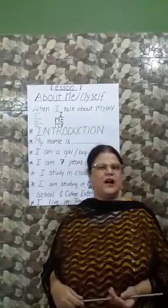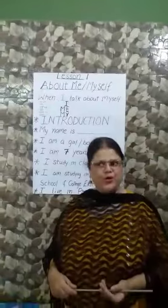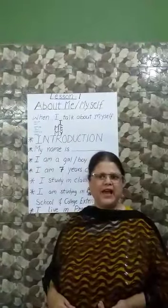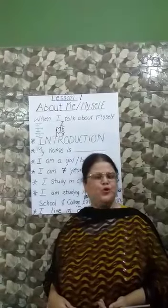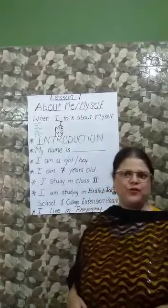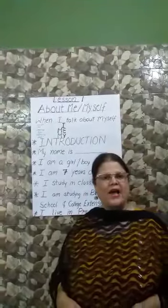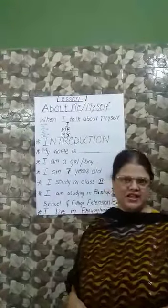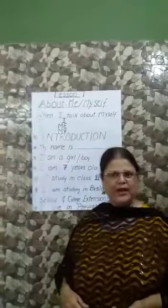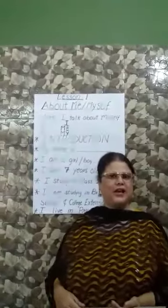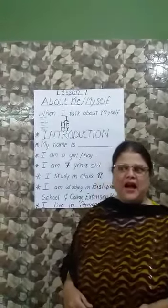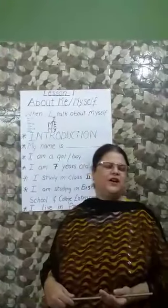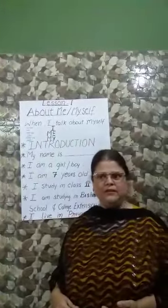Now let us do some practice with the word I. If anyone asks you where do you live, the answer will be: I live in Prayagraj. Where do you study? I study in Bishop Johnson School and College Extension Branch. How old are you? I am 7 years old — whatever your age is, you can mention.